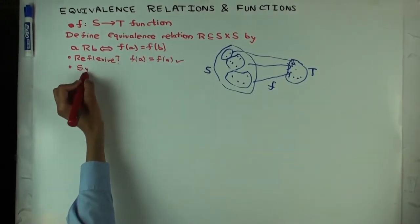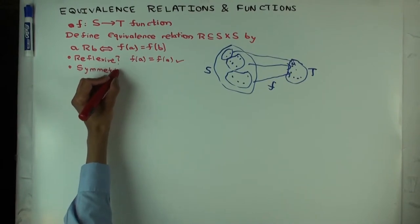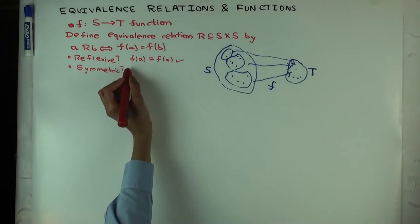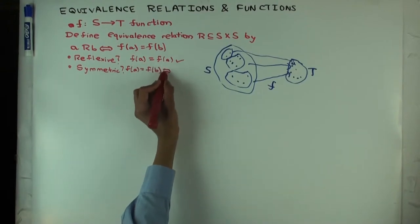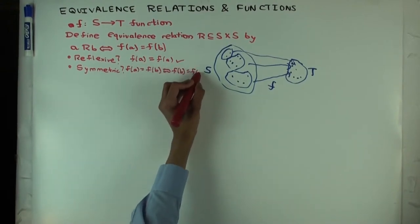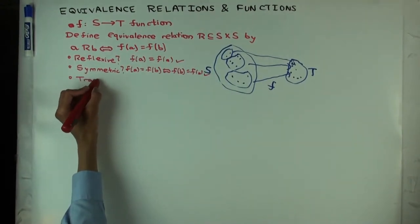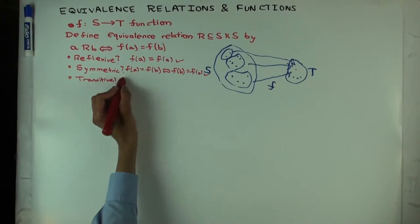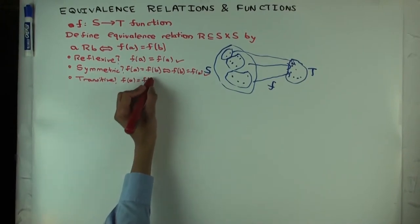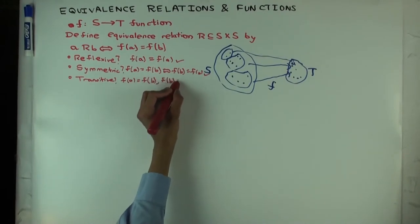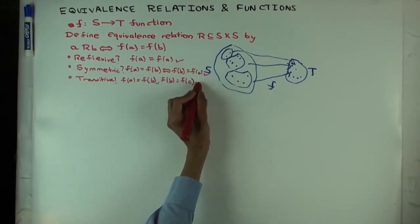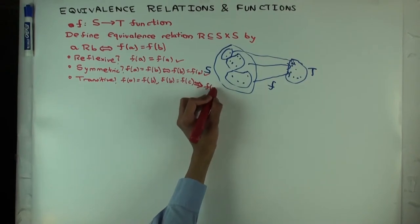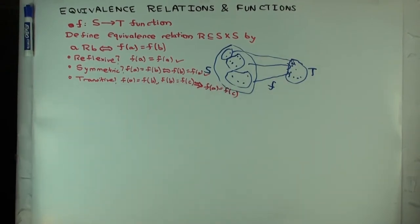Is it symmetric? Well, if f(a) equals f(b), does that mean f(b) equals f(a)? Yes, because equality is symmetric. And transitivity: if f(a) equals f(b) and f(b) equals f(c), then f(a) equals f(c) — you're using that equality is transitive. So this is a reflexive, symmetric, and transitive relation, so it's an equivalence relation.